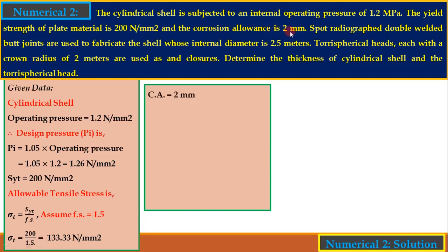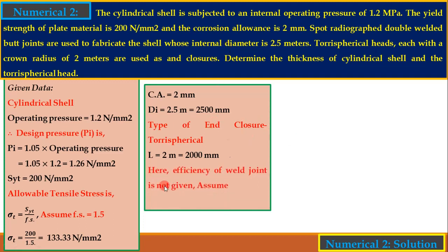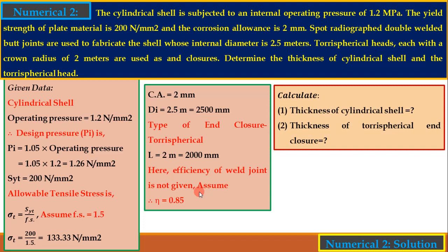CA = 2 mm, di = 2500 mm, enclosure type is torispherical with crown radius L = 2000 mm. Weld joint efficiency is not given in this problem, so assume eta = 0.85. We now have all values to calculate both thicknesses.